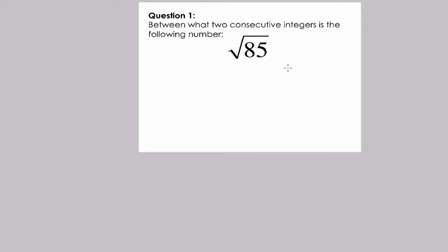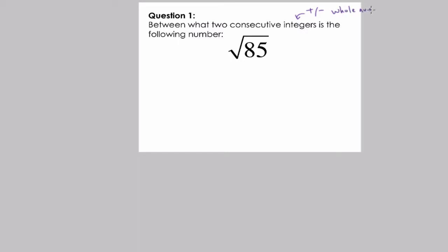Hello and welcome. In this video we are going to be working with problems where we approximate the square root of certain numbers. In this problem they ask between what two consecutive integers is the following number. Consecutive integers — consecutive means numbers in a row, and integers are positive or negative whole numbers including zero.